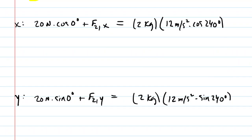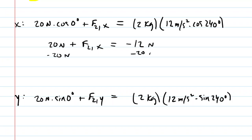Going back to the x direction: 20 times the cosine of zero gives 20 newtons, so we have 20 newtons plus the x component of F2. On the right side, 2 times 12 times the cosine of 240 gives negative 12 newtons. Subtracting 20 newtons from both sides, the x component of F2 is negative 32 newtons.